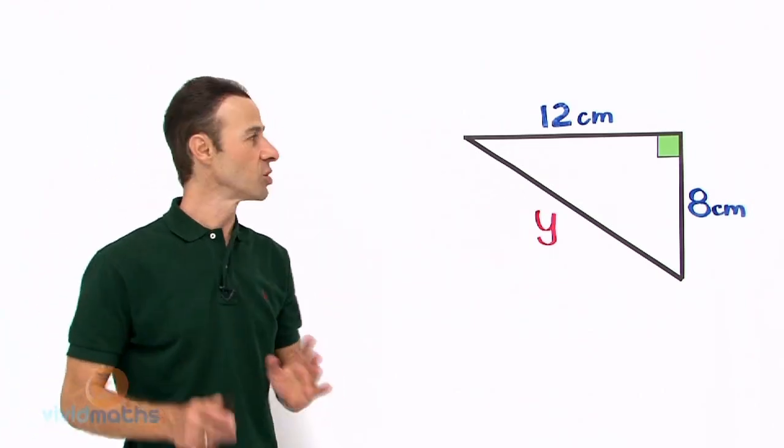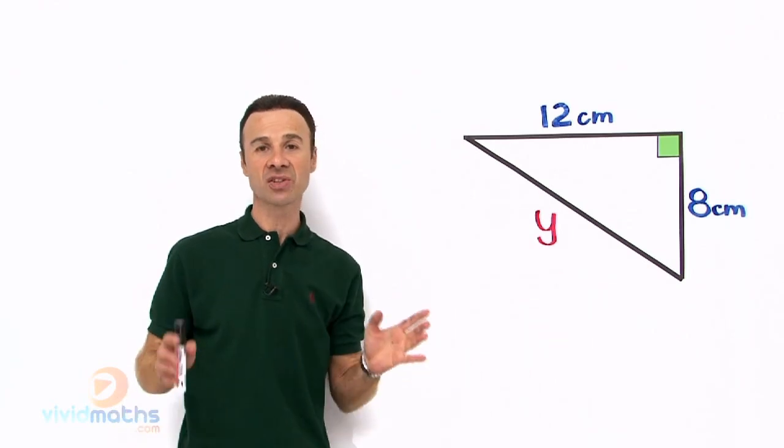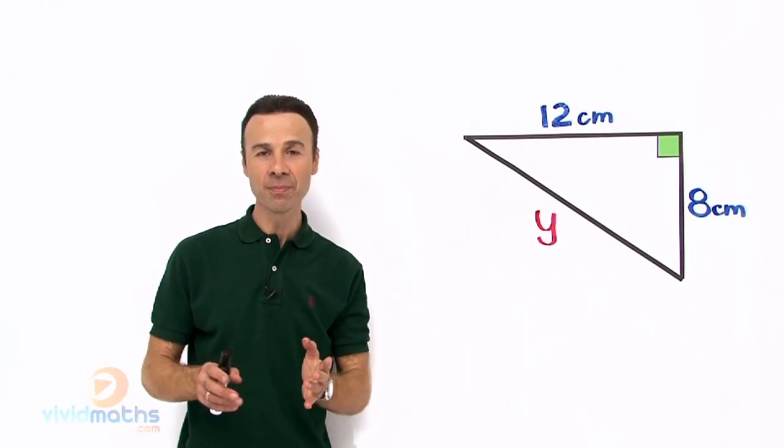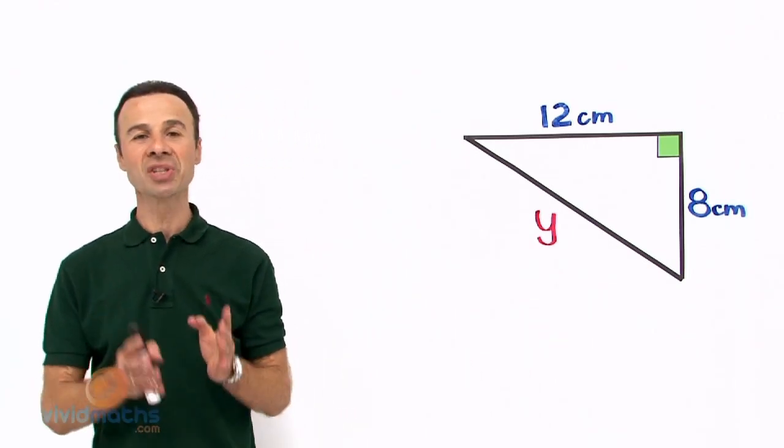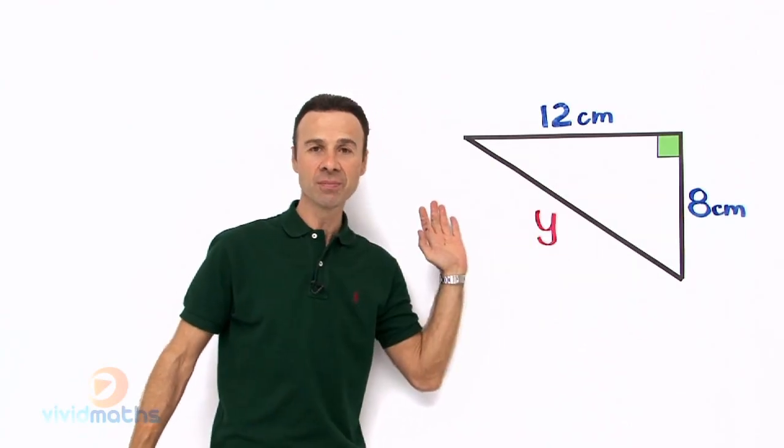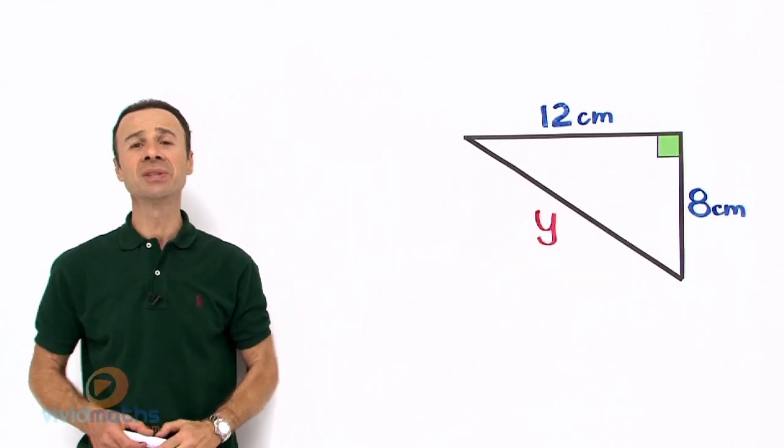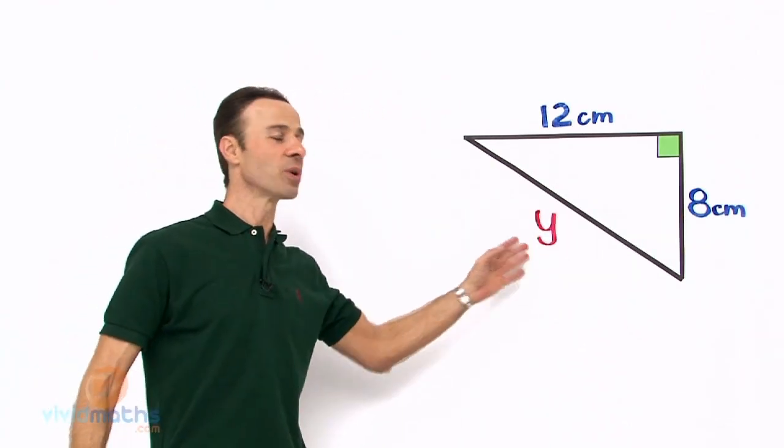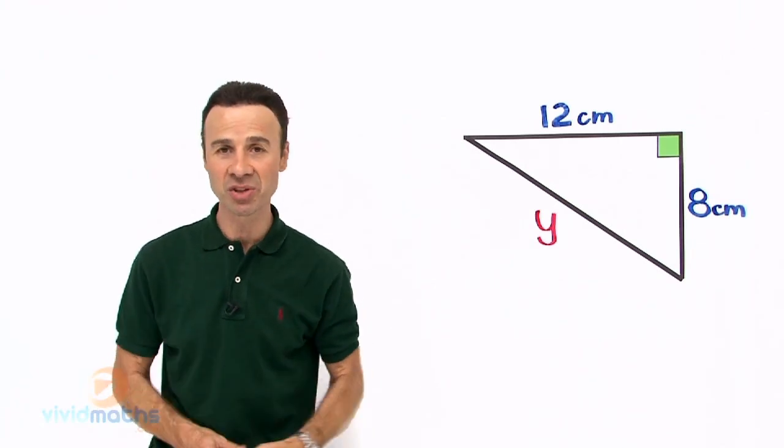Step number one is to form an equation, and that is the equation from Pythagoras theorem. Step number two is to substitute the numbers we have into the equation, and step number three is to take the square root so we can find what the missing pronumeral is. So let us go through those three steps.